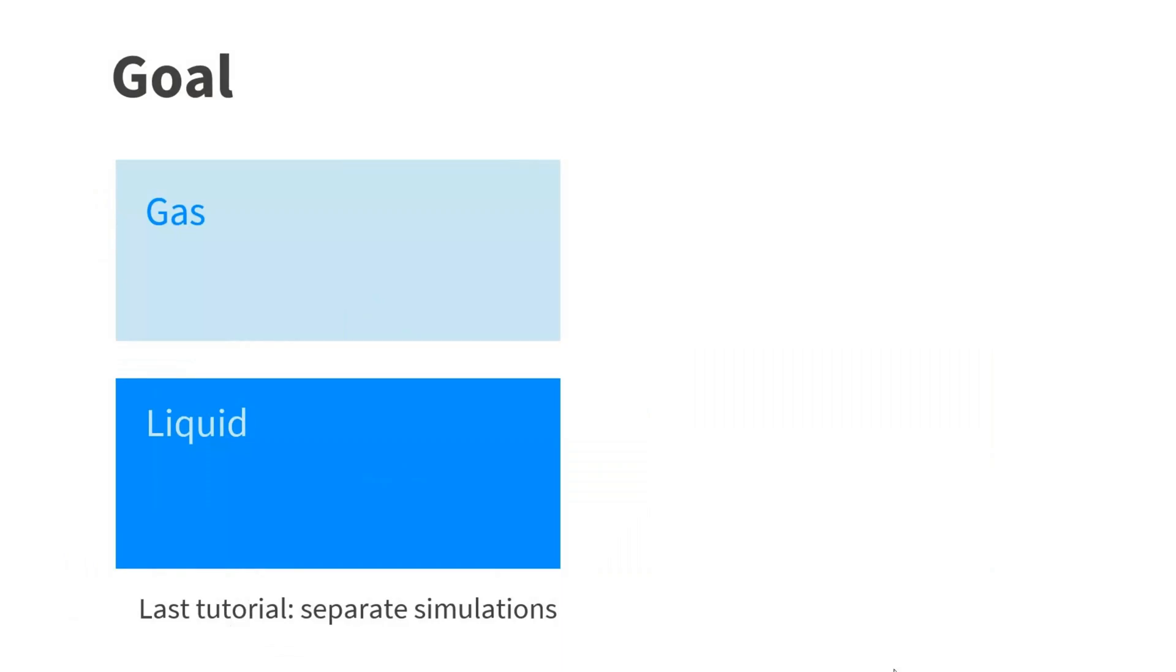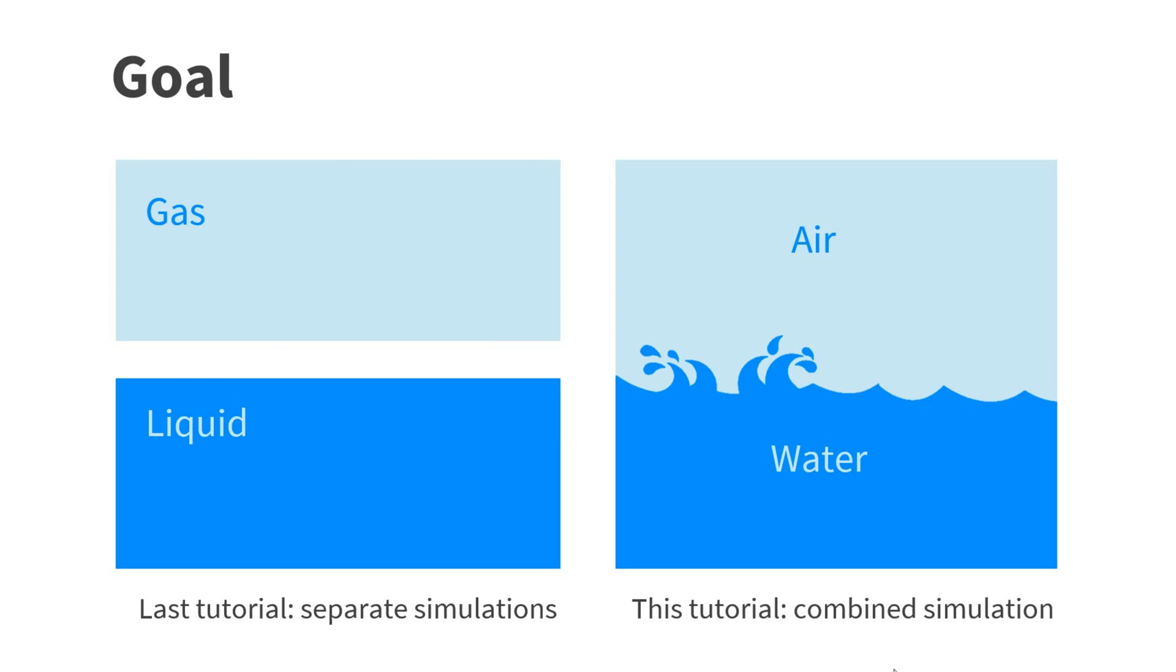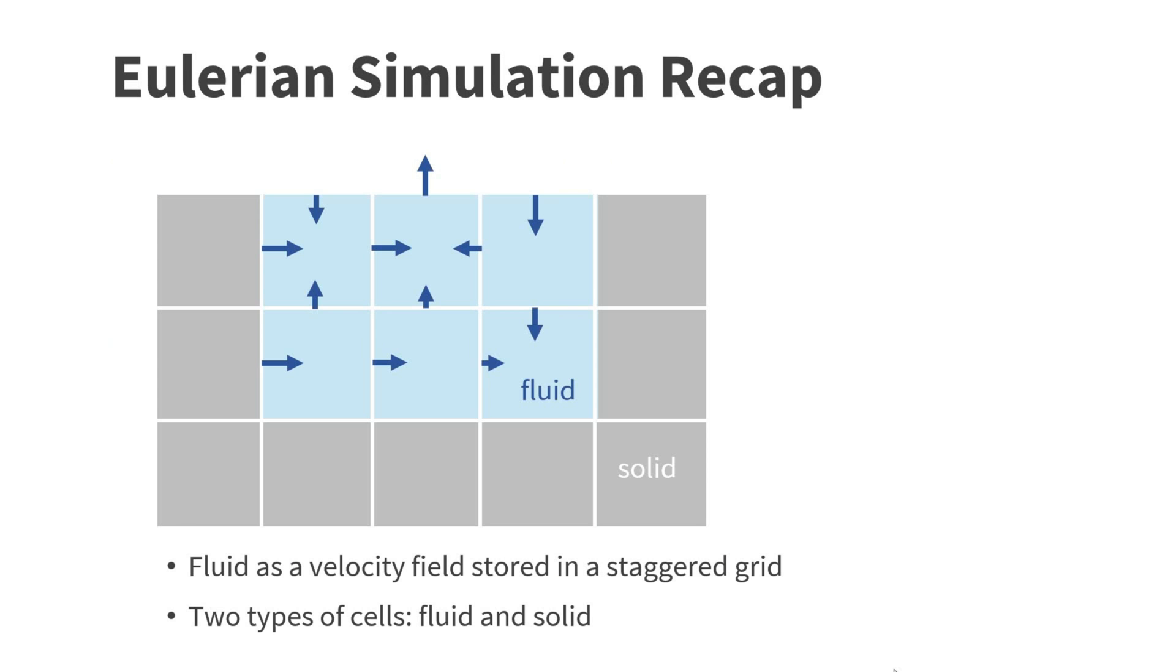In the last tutorial, I showed you how to either simulate gases or liquids in separate simulations. Today, I will show you how to create a combined simulation of water and air with a free surface in between. The approach is based on the Eulerian fluid simulation method. Therefore, I recommend to watch tutorial number 17 first. I tried to make this tutorial self-contained though.